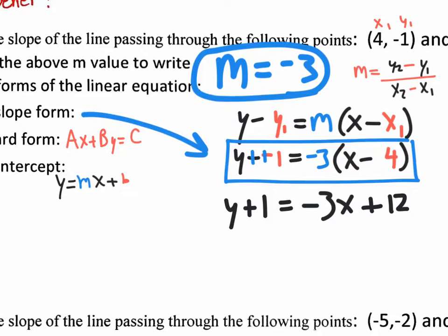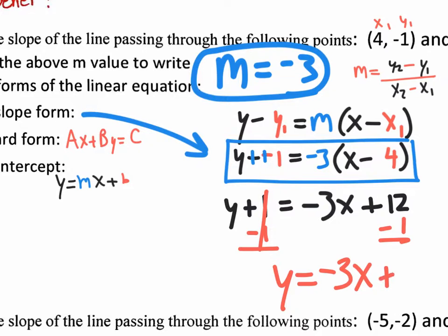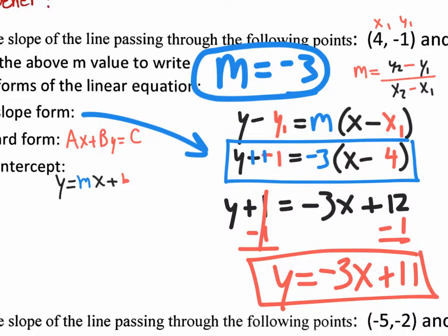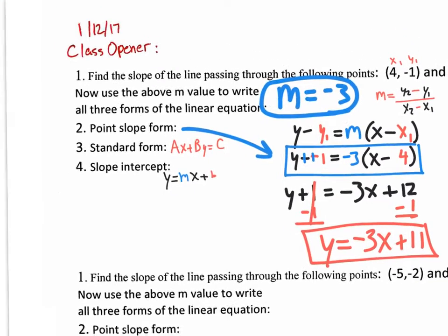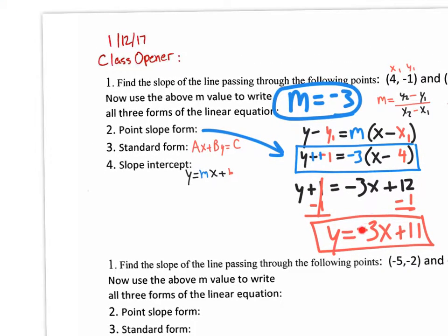It's easy to go for slope intercept form first in this case because all I need to do is subtract one. So y equals negative three x plus eleven — that's slope intercept form. Be careful: if you write this as your answer for number three, it'll be wrong because number three asks for standard form. Slope intercept goes in spot number four.